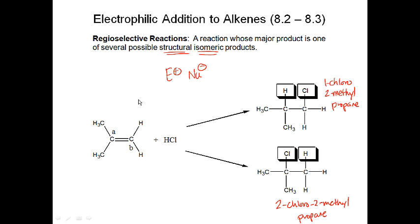There are two parts to regioselective reactions. First, the 'regio' part: you form two products that are structural isomers with different names — and remember, structural isomers have the same molecular formula. The second part is 'selective': you get a major product and a minor product. Both criteria must be fulfilled for a reaction to be regioselective.